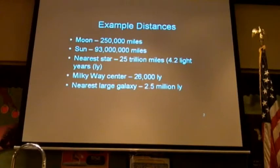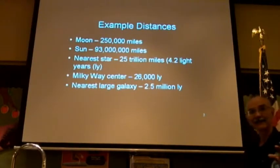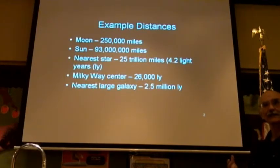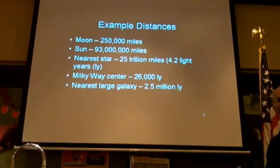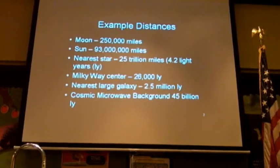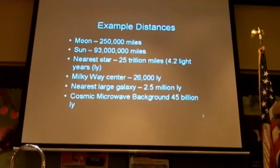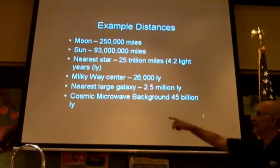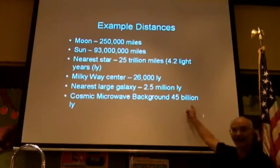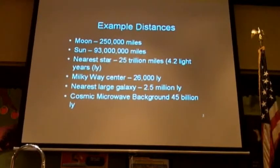When we show you the Andromeda galaxy at 2.5 million light years away, you're actually seeing it as it was 2.5 million years ago. Andromeda is the closest full normal galaxy to us. And way, way out there is what's called the cosmic microwave background at 45 billion light years distance.